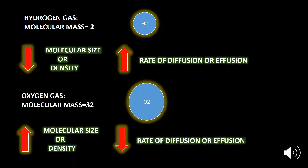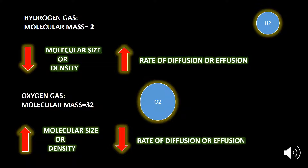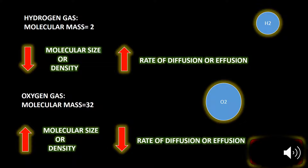Let's take an example of gases. We have two gases: hydrogen gas and oxygen gas. Hydrogen has a molecular mass of 2, whereas oxygen has a molecular mass of 32. So which gas will diffuse faster? The gas with less molecular mass will diffuse more compared to the gas with more molecular mass. Therefore, hydrogen, having a molecular mass of 2, will diffuse more rapidly than oxygen.